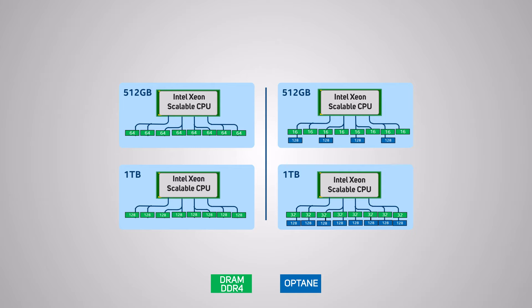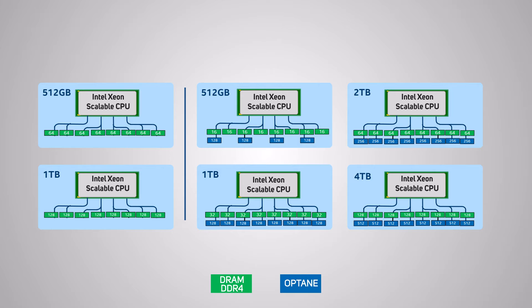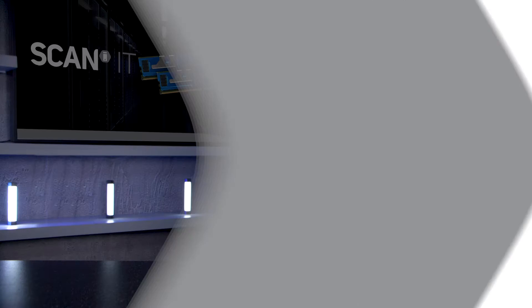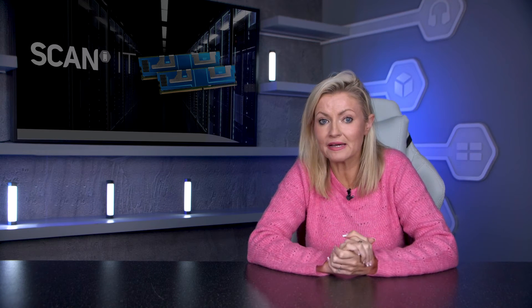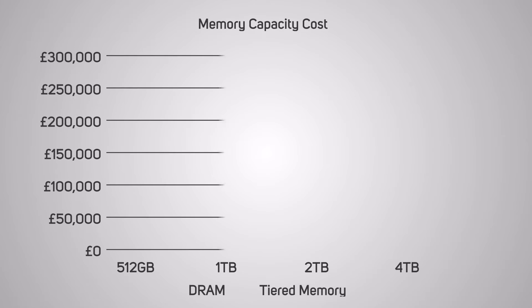Alongside large Optane DIMMs of 128, 256, or 512 gigabyte sizes, this not only makes scaling of system memory more cost-effective, but due to the high capacities of PMEM DIMMs, large combined totals may be achieved — up to six terabytes, more than could be achieved with DRAM alone.